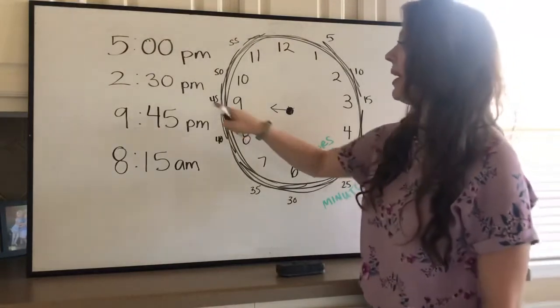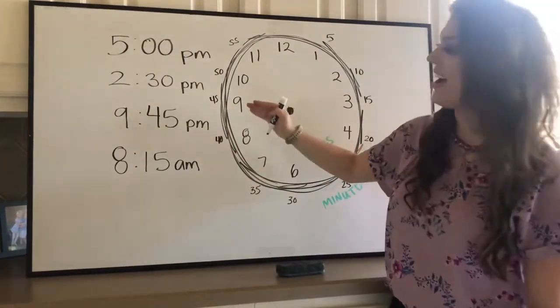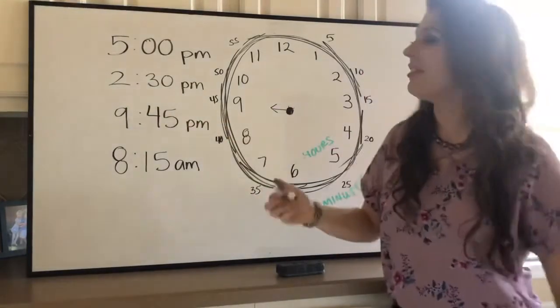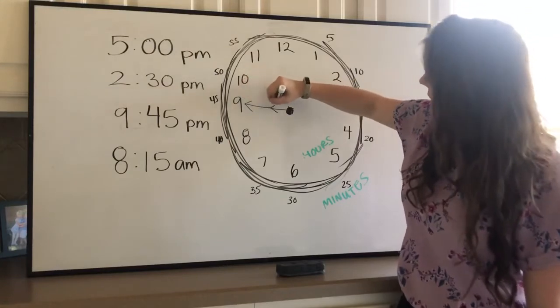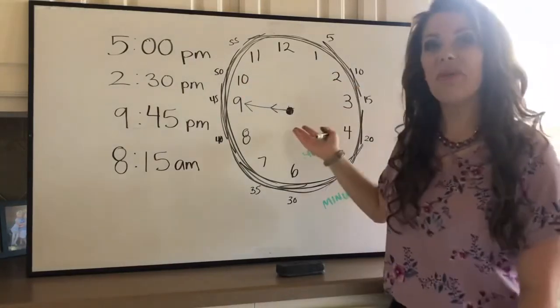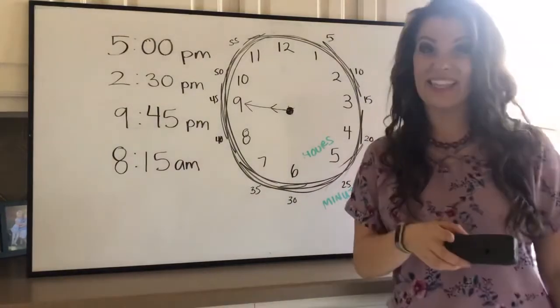So nine, my ninth hour, my short hand would face straight over to the nine. And 45, my 45 minutes, that's also the nine. So I draw my longer arrow right over. And that would be 9:45. How cool. Did you guys get that?